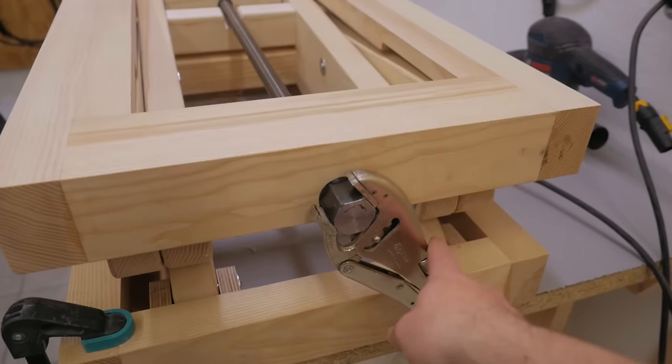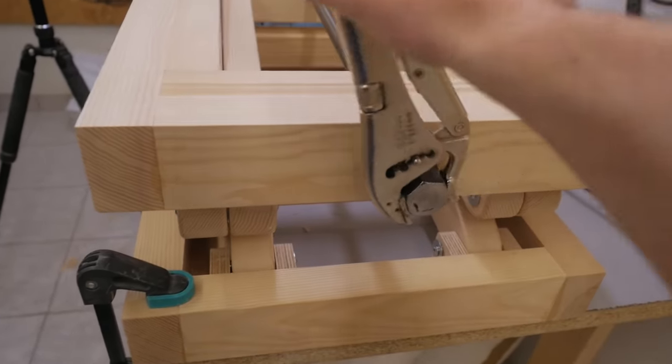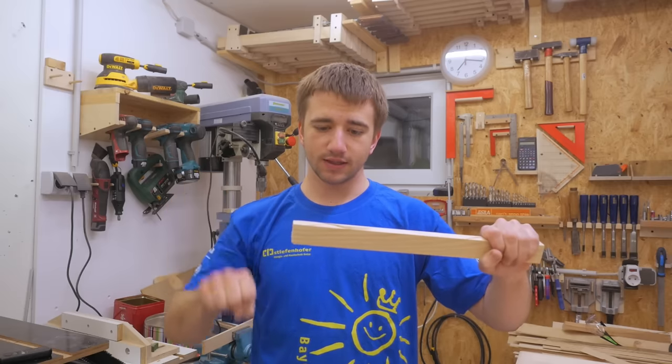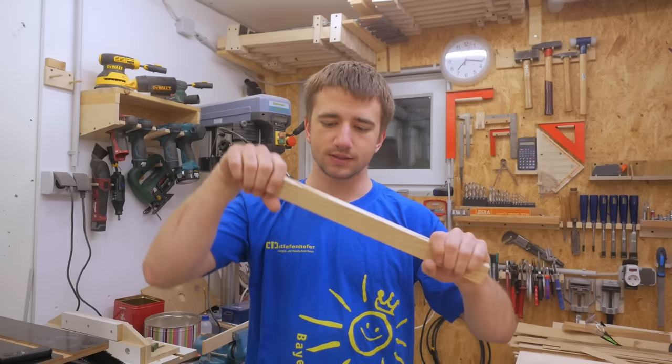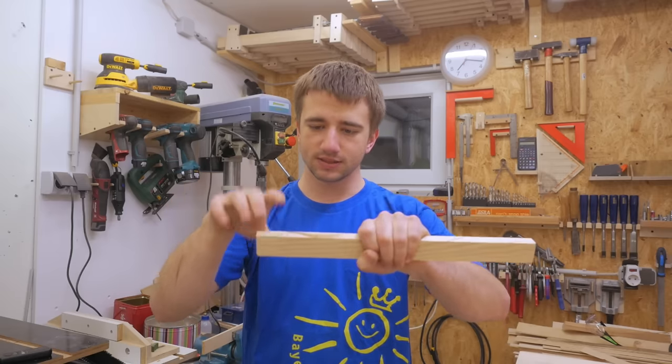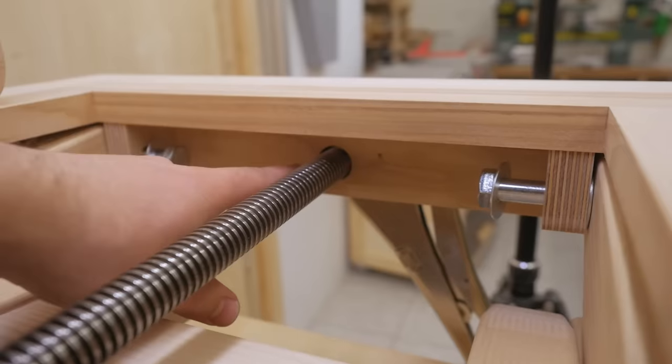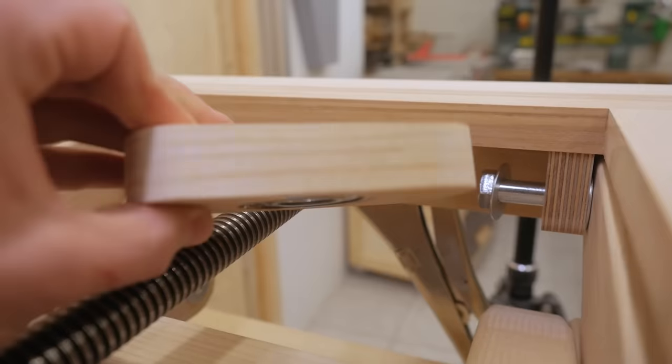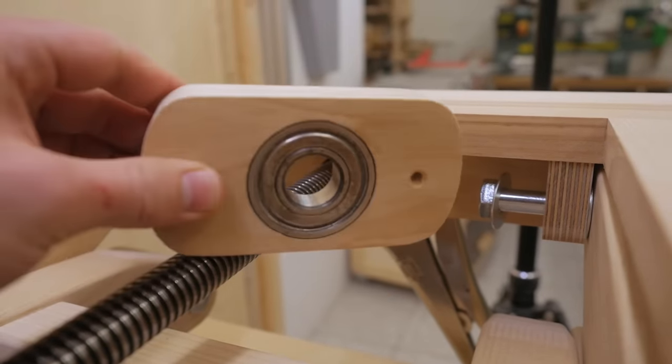Also right now there's nothing that can take the radial forces from the cranking. Because if you'd crank on an unsupported shaft then it would just do something like this. So there needs to be a support that can take that load. The flange bearing right here would be pretty good but since I already had a regular bearing the right size I just made a wooden flange for it and I'll use that.